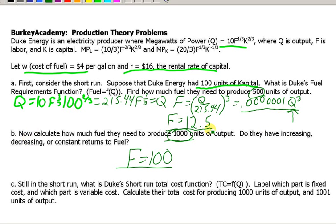How do we know? Well, what we did is we have to more than double the fuel to double the output from 500 to 1,000. We have to multiply the amount of fuel by much more than doubling. So, this tells us that we have decreasing returns to fuel here. Okay, let's look at the next question.